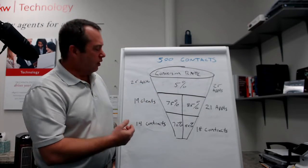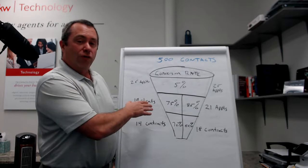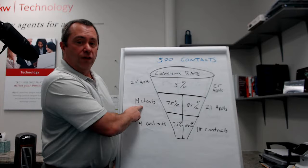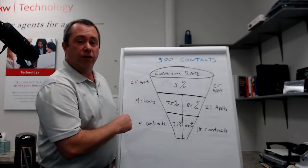Now let's increase the quality of our conversation. Good closing ratio when you're on an appointment, 75%. Should yield you 19 clients out of 500 contacts.